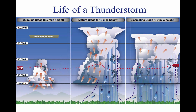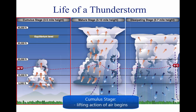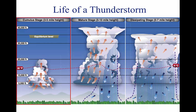A thunderstorm makes its way through three distinct stages before dissipating, as shown above. It begins with the cumulus stage, in which lifting action of the air begins. If sufficient moisture and instability are present, the clouds continue to increase in vertical height. Continuous, strong updrafts prohibit moisture from falling, and the updraft region grows larger than the individual thermals feeding the storm.